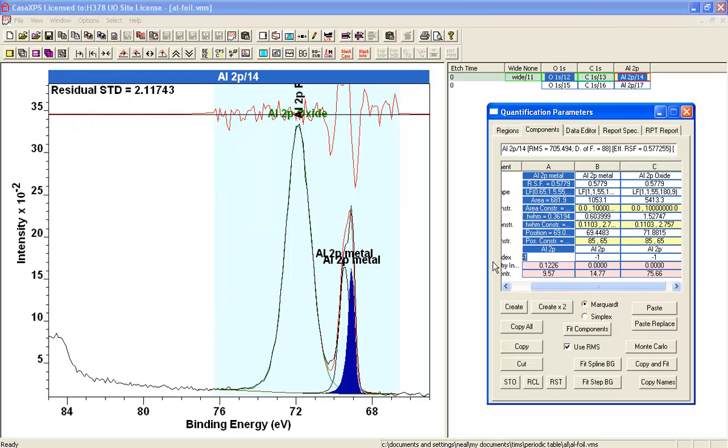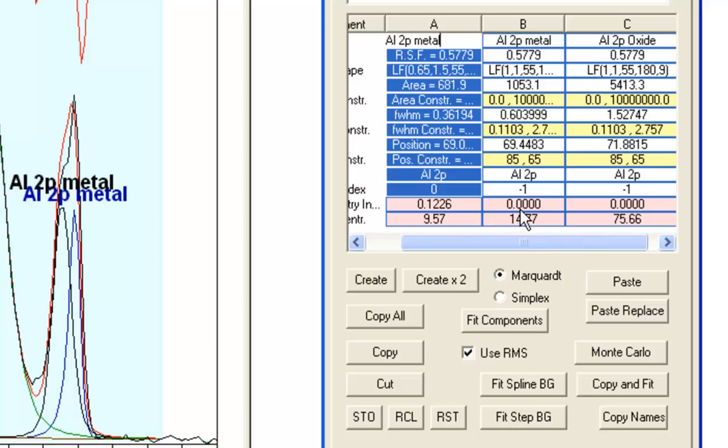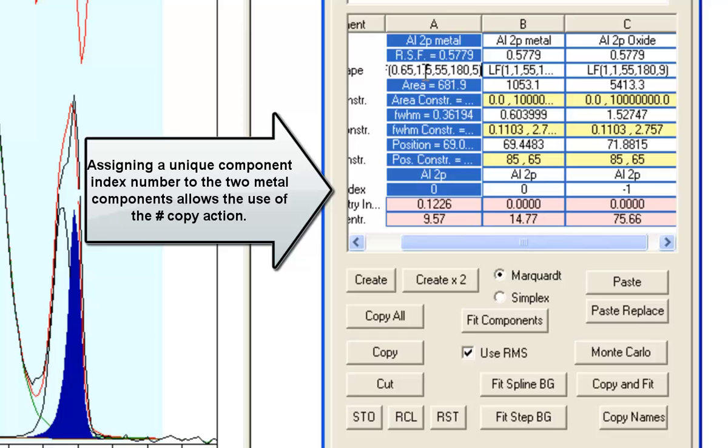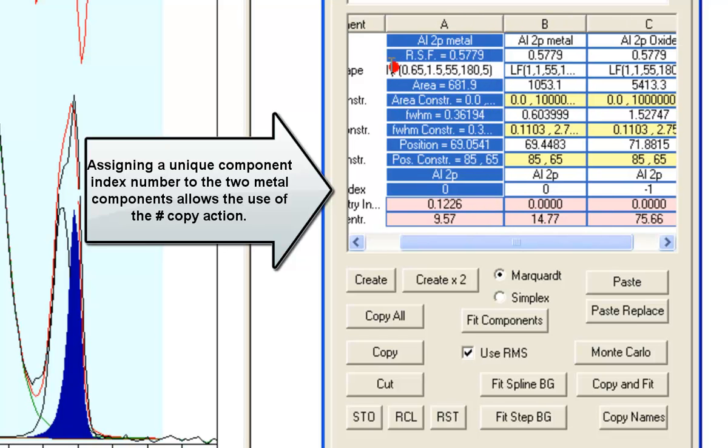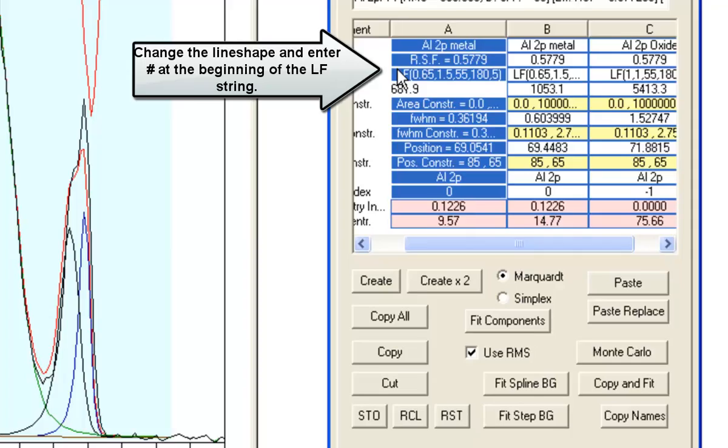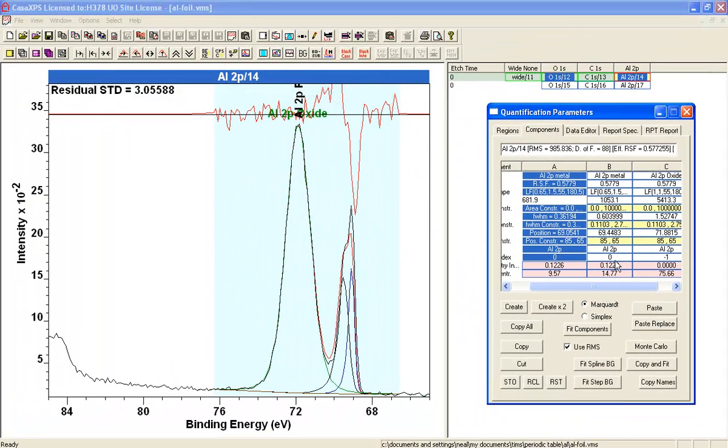And what I'll do is I want to propagate that to the other peak that I'm assigning as a metal. So I can do that by entering at the beginning a hash and pressing return. It'll say update all components with the same component index. I say yes, and that's why I changed these to have the same component index. So now I've got two components with the same line shape and I can say fit.